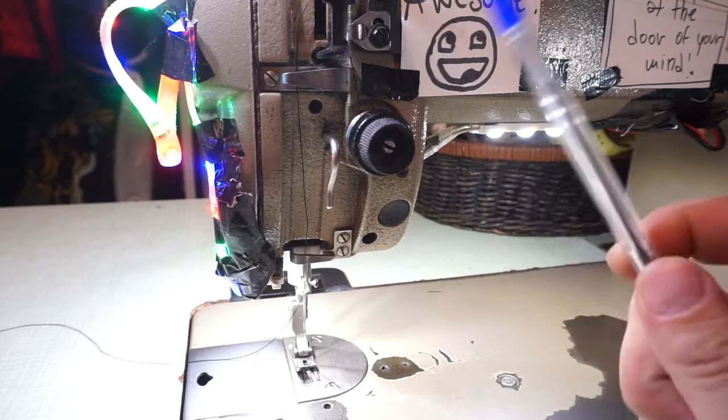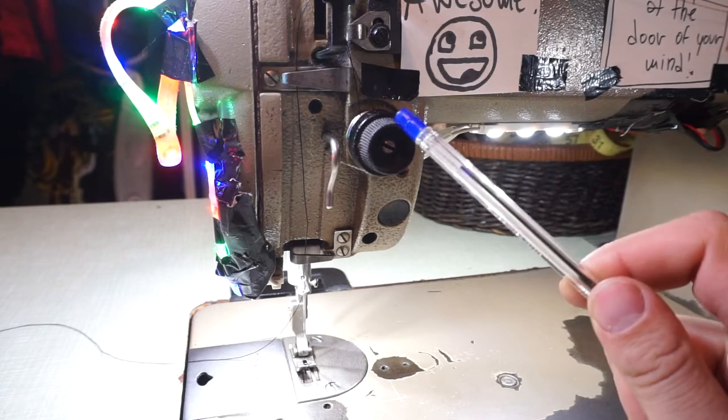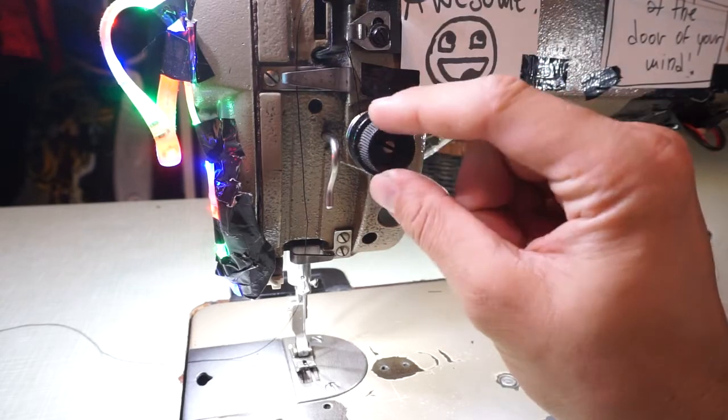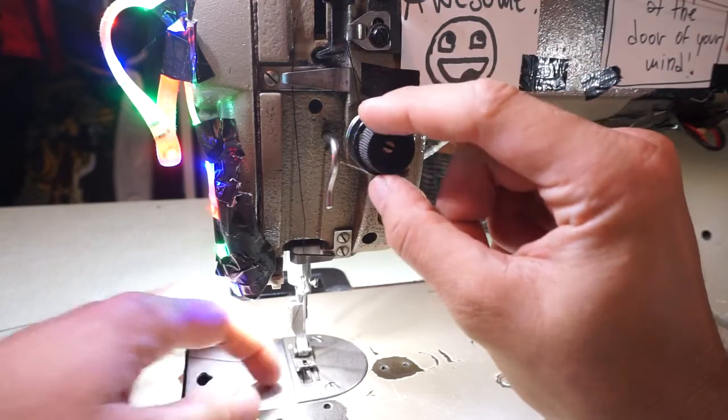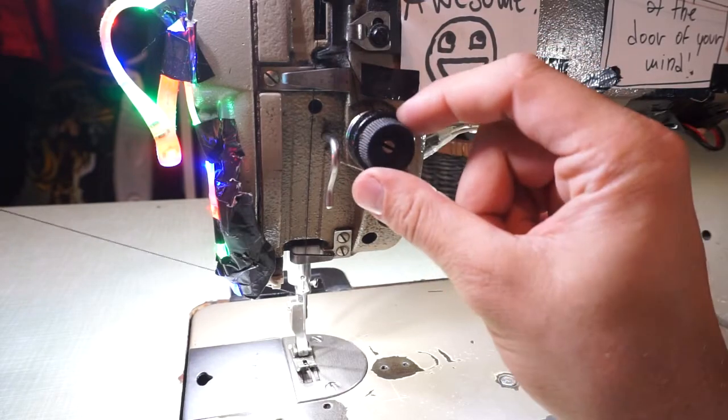Upper thread tension is determined by this thread tension knob here. You determine the tension by twisting it to the right or to the left. To the right you're increasing the thread tension and to the left you're decreasing it.